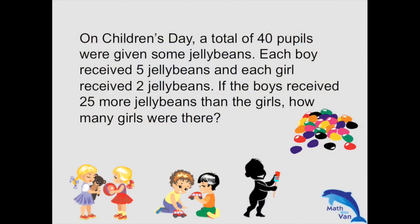On Children's Day, a total of 40 pupils were given some jelly beans. Each boy received five jelly beans and each girl received two jelly beans. If the boys received 25 more jelly beans than the girls, how many girls were there?